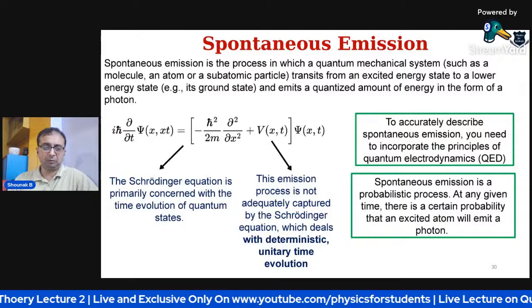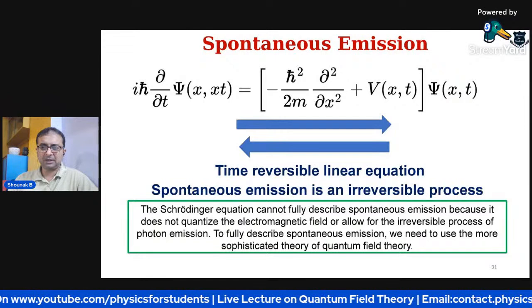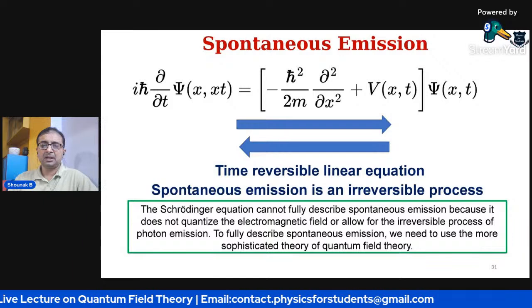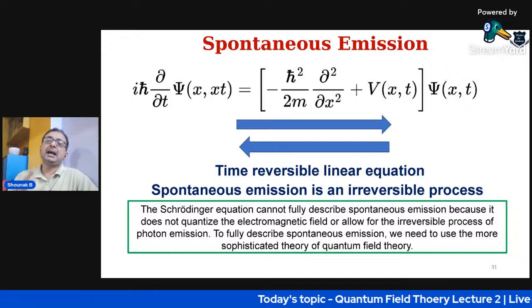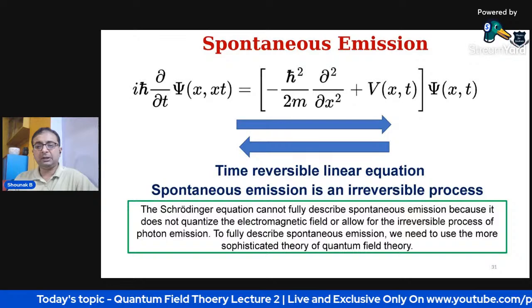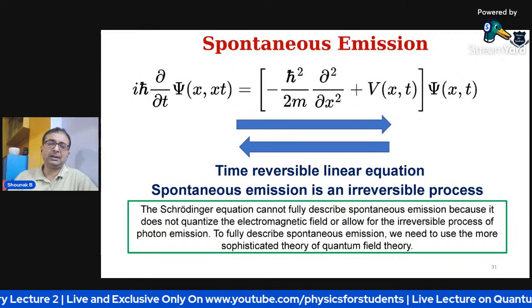The Schrödinger equation is primarily concerned with the time evolution of quantum states. It can describe how a quantum wave function changes over time when not perturbed by external influences. Schrödinger's equation is a time evolution equation — with the passage of time the quantum system will slowly evolve. This is a kind of deterministic, classical system, and this time evolution is registered by Schrödinger's equation.